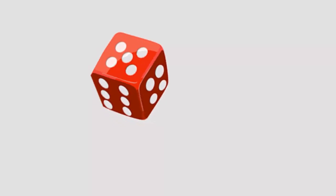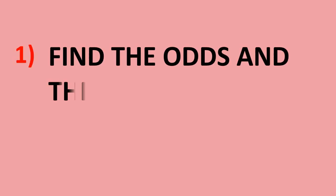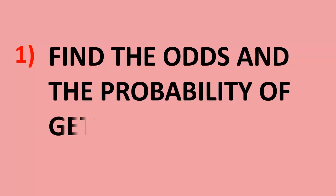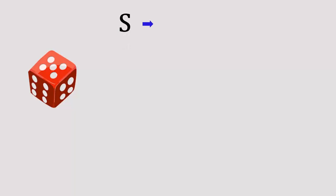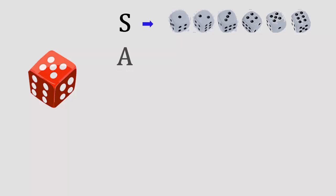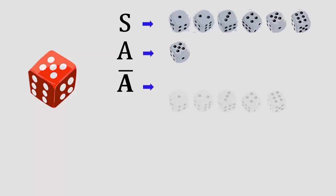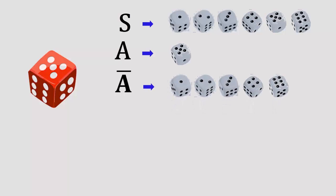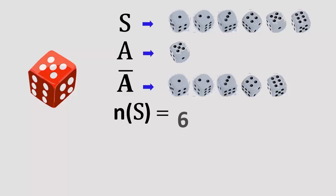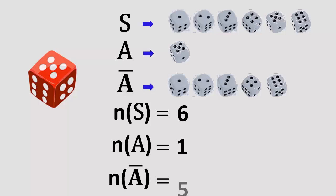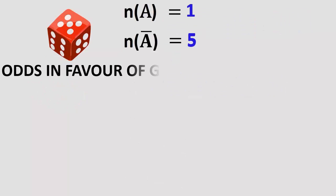Let us solve Example 12.7. Suppose a die is rolled and A is the event of getting five. Find the odds and probability of getting five. S is the sample space, A is the event of getting five, A-bar is the event of not getting five. Therefore n(S) = 6, n(A) = 1, n(A-bar) = 5.